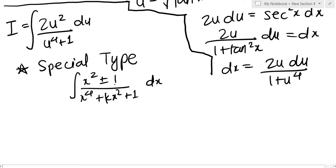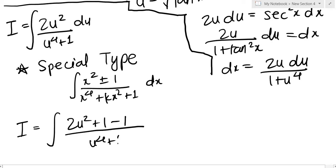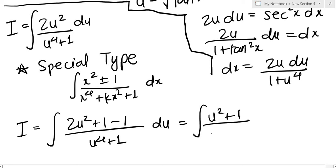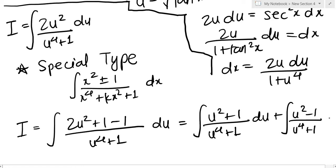We don't have a 1 on top here, so I can just add and subtract 1 to put it in the special form. So I can write this as the integral of (2u² + 1 − 1) / (u⁴ + 1) du, and split it into two integrals: (u² + 1) / (u⁴ + 1) du and (u² − 1) / (u⁴ + 1) du.